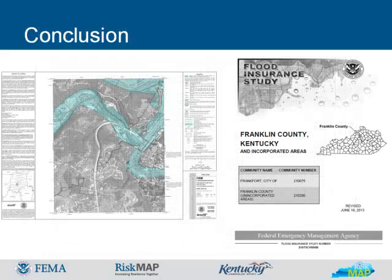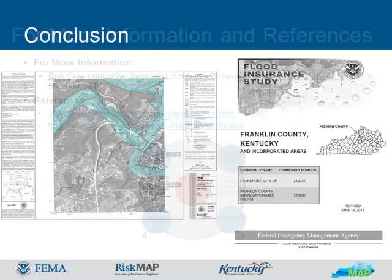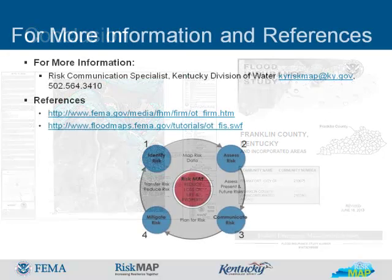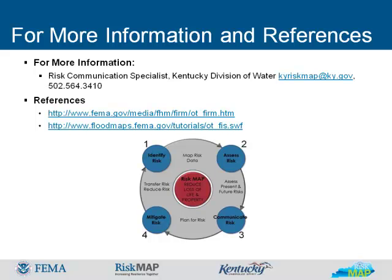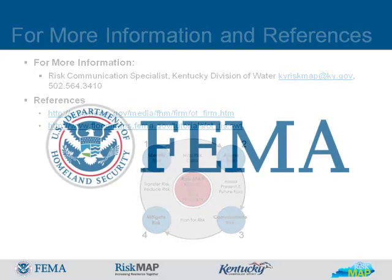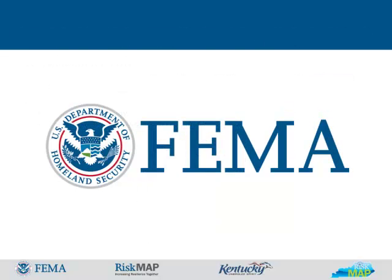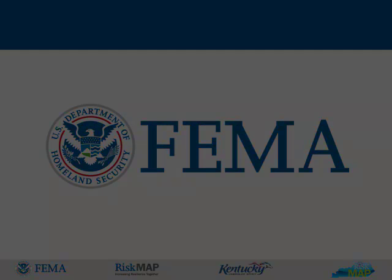From this learning module, you should have learned what information is included in the flood insurance study and how to use the information in conjunction with the flood insurance rate map to determine flood risk. Knowing this will enable you to make wise decisions to reduce risk from potential flood hazards. For more information, contact the Risk Communication Specialist for the Kentucky Division of Water. This concludes our learning module on how to read a FIRM and FIS.